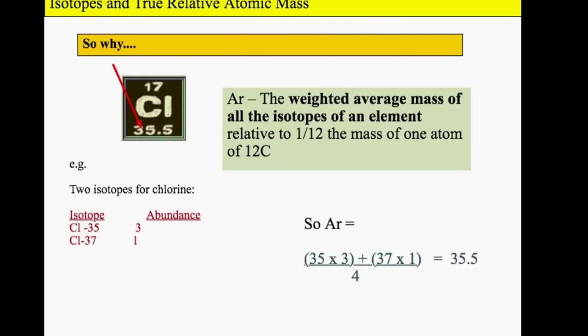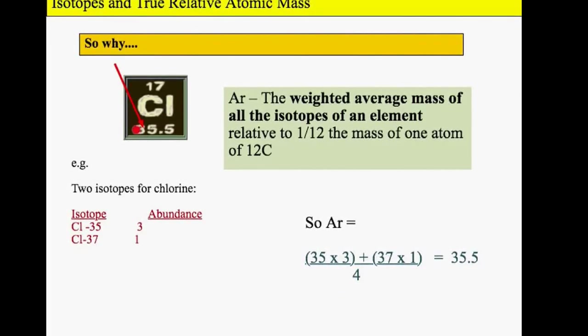To work out the relative atomic mass, or AR, you times the mass by the abundance. We've got 35 times 3, then you plus the other isotopes. In this case we've got two isotopes, so 37, that's the mass of that chlorine, times the abundance, one. Then you divide it by the total abundance. We've got three of that and one of that, so it equals four. If you put that into a calculator, it comes out as 35.5, which is your relative atomic mass.